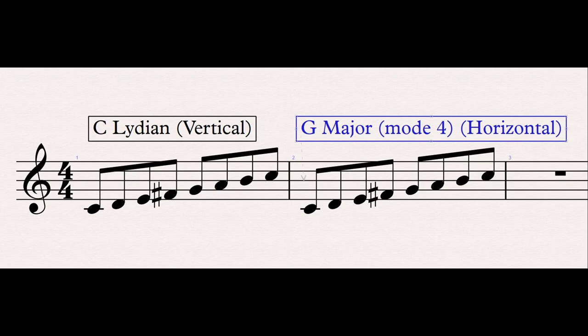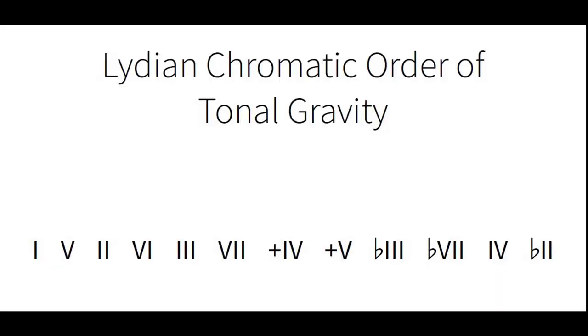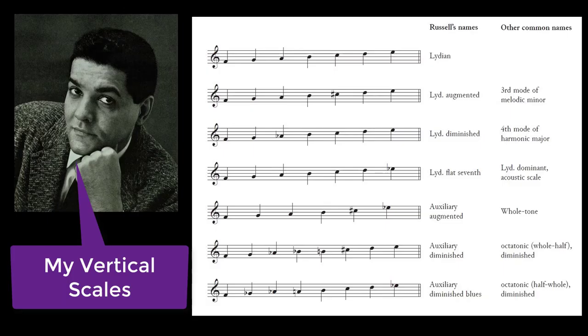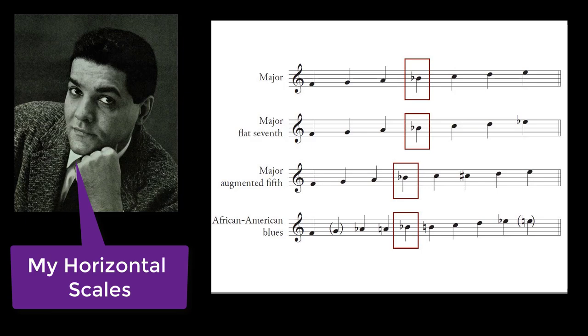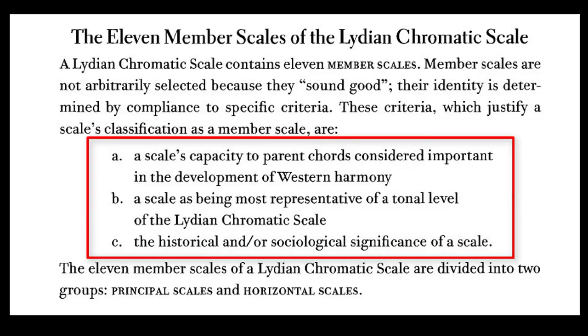I think this is important: according to George Russell, the Lydian scale and major scale are two entirely separate and different musical concepts. The scales are generated more or less from the chromatic order of tonal gravity, which is given here in its generic form. When taken together, the entire series represents the Lydian Chromatic scale. The Lydian Chromatic — or LC — scale contains 11 member scales.